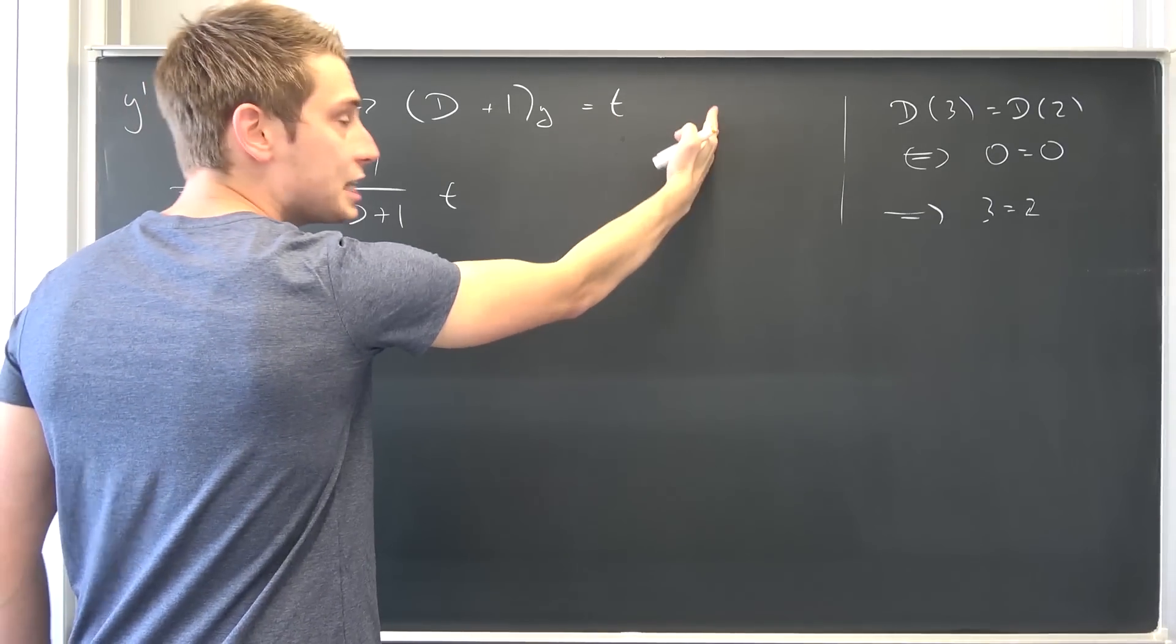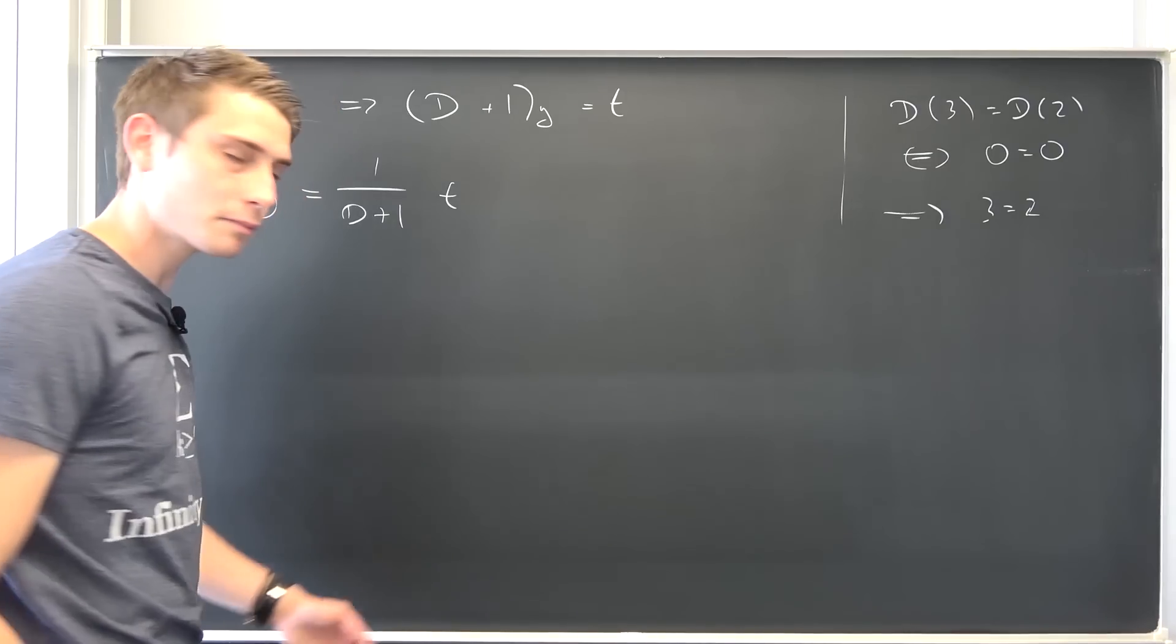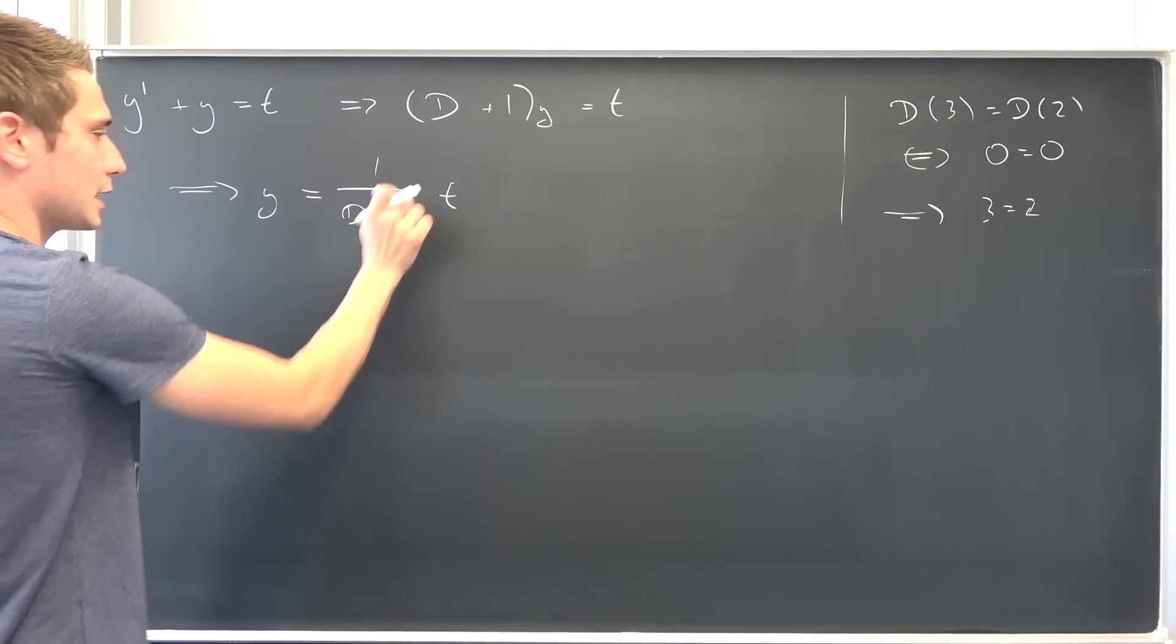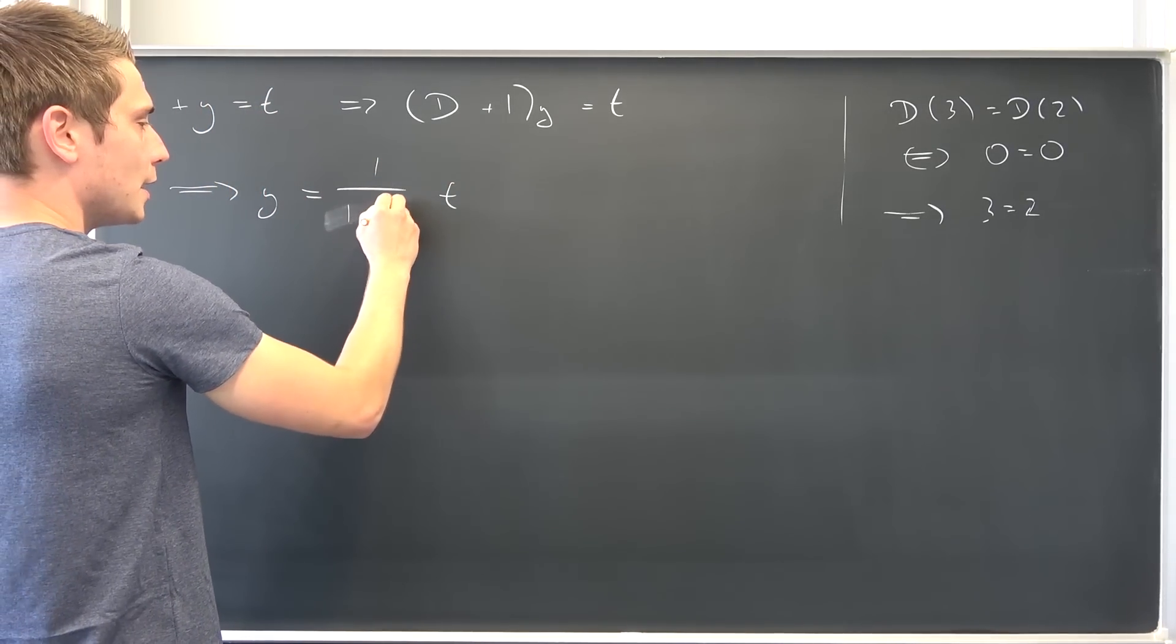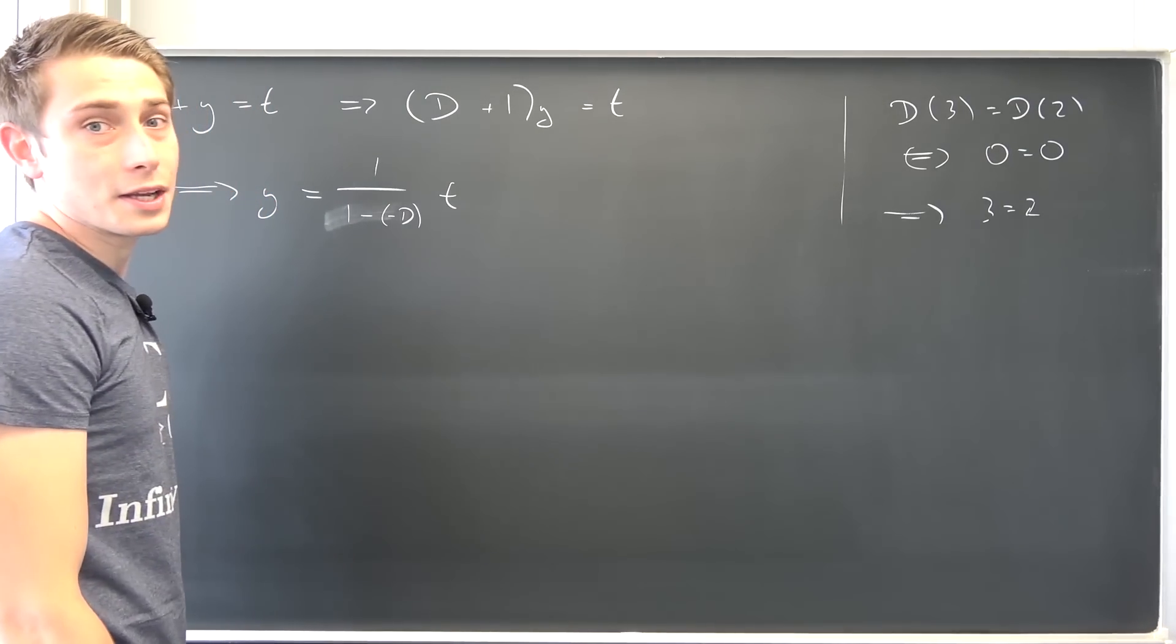So we are going to be left with y, our solution to the differential equation, is going to be 1 over (D + 1) times t. Don't forget to put the t to the side because we have to differentiate something. And now here's the really obvious thing. I'm going to rewrite this as 1 over (1 - (-D)). Why does this help?